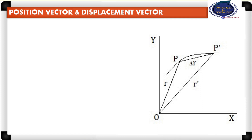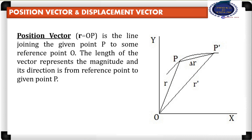In this diagram we can see that the position of a particle at a certain interval of time is represented as P. To reach that position, you need a particular direction and definite magnitude. Therefore, in order to reach the point P, direction and magnitude are both important. Hence, position is always treated as a vector. The position vector is the line joining the given point P to some reference point. The length of the vector represents the magnitude and its direction is from the reference point to the given point.